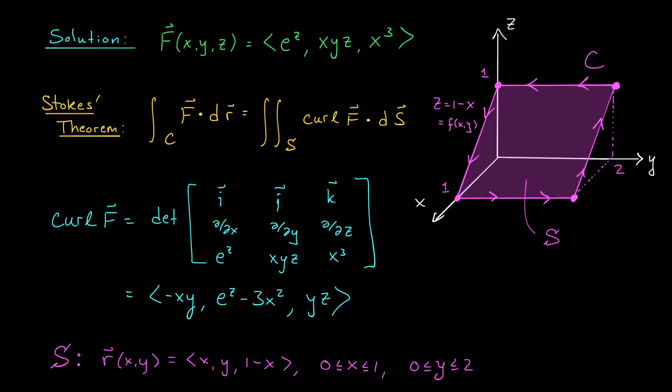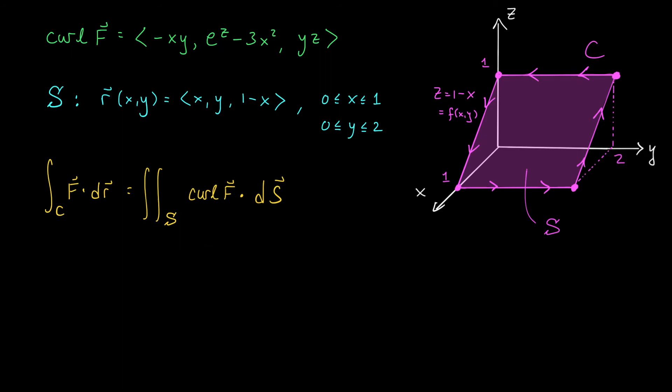Now that we have a parametrization for our surface and the curl of our vector field, we're ready to compute this surface integral. To compute this surface integral, let's think back to our formula. The surface integral of the curl of F throughout S is really the double integral over D, D here is the set where our parameters live, this set here,